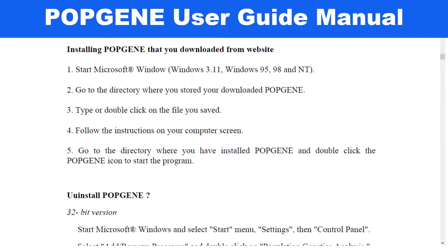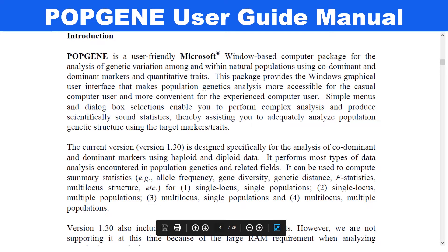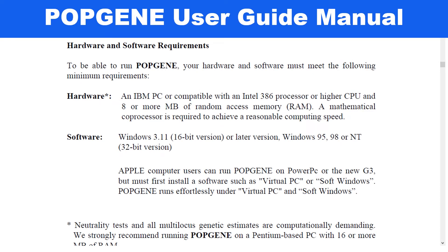The software is suitable for Windows 95 onwards — Windows 7, 8, 10, and 11 as well. Just search for Popgene software on the web, click the first result, and complete the simple installation. This software is available in 32-bit and 16-bit versions; 32-bit is suitable for all users. The minimum requirement is 8 MB RAM and a 386 processor or higher CPU.